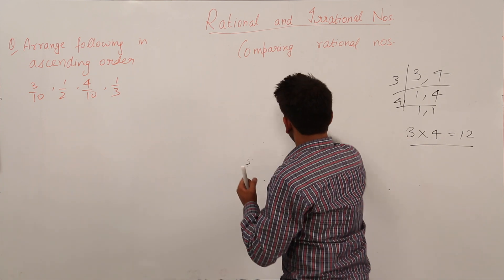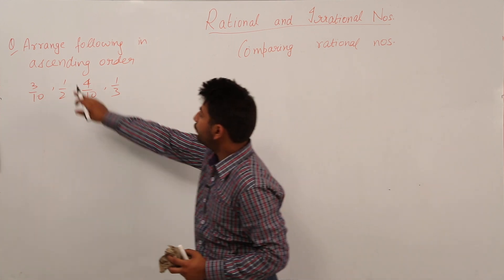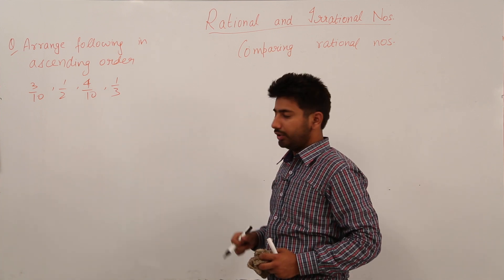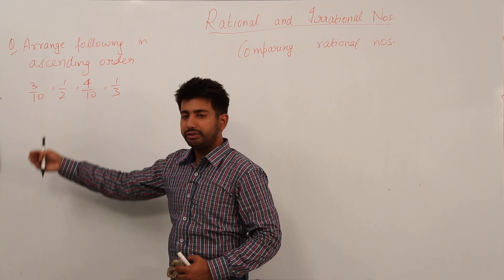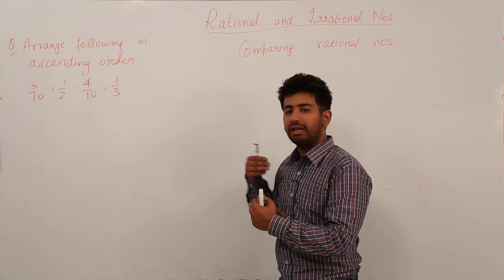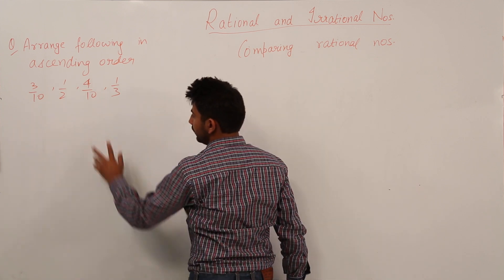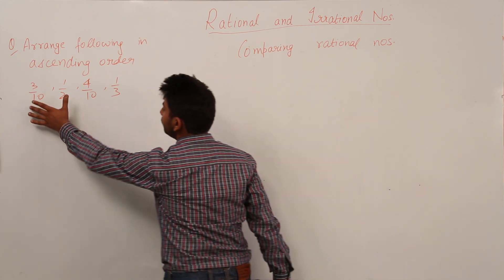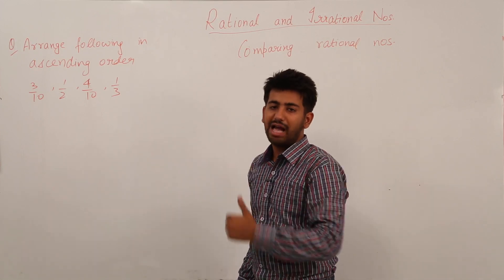Now let us do a question in this segment: arrange the following in ascending order — 3/10, 1/2, 4/10, 1/3. Ascending order means we write the lowest number first and the largest number last. In this question, the denominators are 10, 2, 10, and 3. The two fractions with denominator 10 share a denominator, but we cannot compare all four numbers unless all denominators are the same.